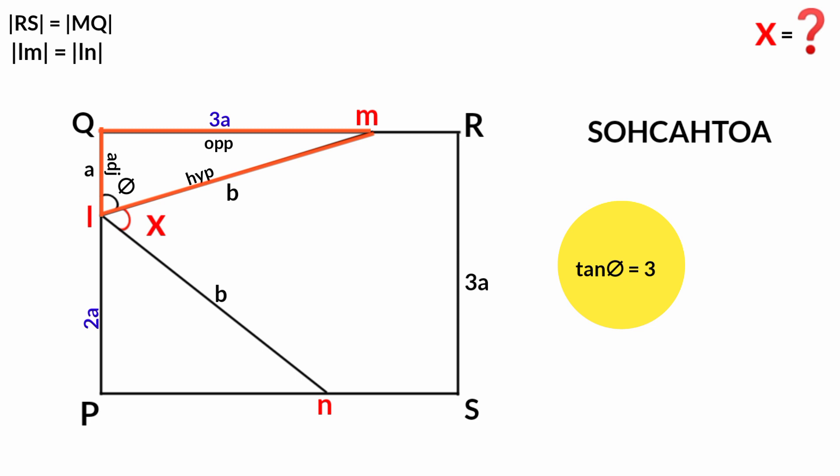The exact value of theta will be determined by the tan inverse of 3. So therefore theta equals tan inverse of 3, which is 71.57 degrees. So theta is 71.57 degrees.